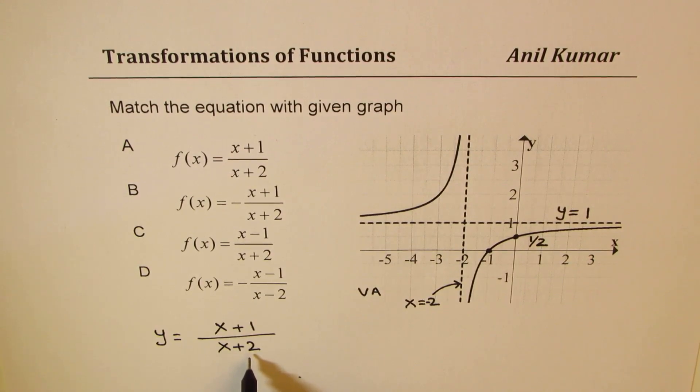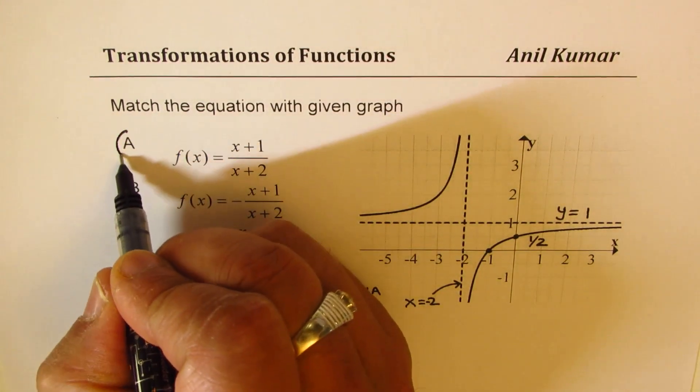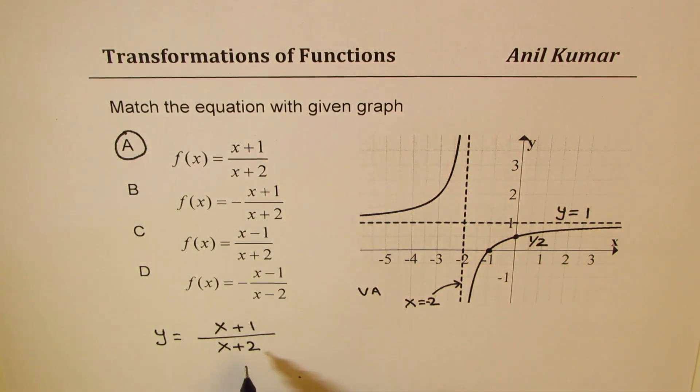That seems to be the perfect equation for the given graph, and we have option A which represents it. So I hope these steps are clear.